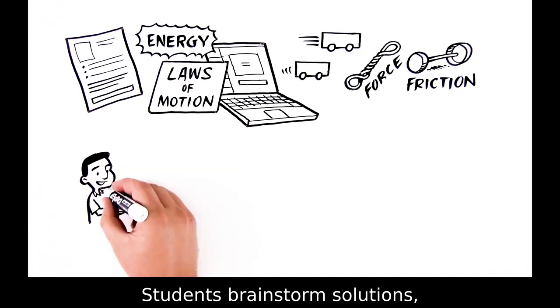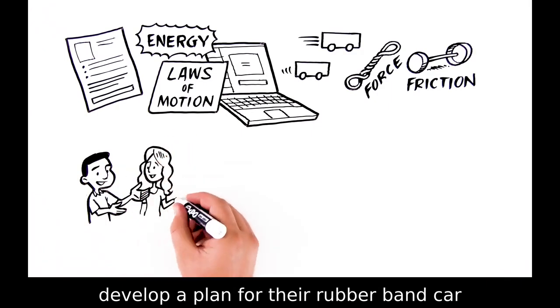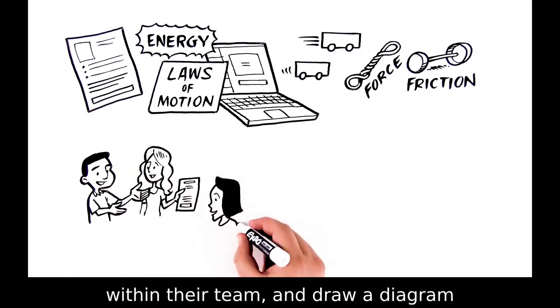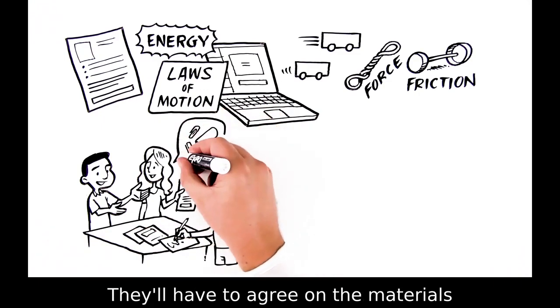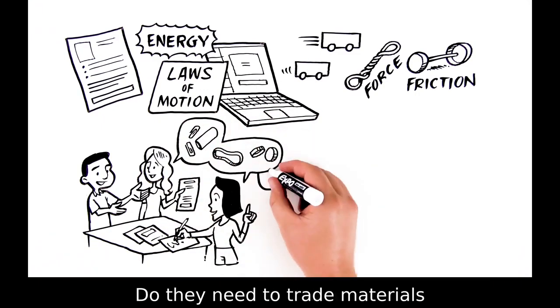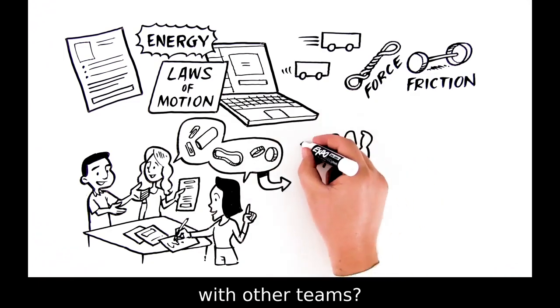Students brainstorm solutions, develop a plan for their rubberband car within their team, and draw a diagram of their planned car on paper. They'll have to agree on the materials they will need. Do they need to trade materials with other teams?